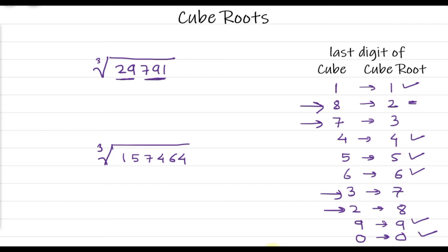The second step is also similar: we derive the last digit of the cube root. Here the last digit of the number is 1, so the cube root must also end with 1 — and there is only one possibility. For the third step, we find the closest perfect cube for the remaining group, which is 29. The closest perfect cube less than or equal to 29 is 27, and its cube root is 3. So the answer is 31.